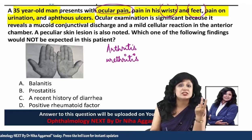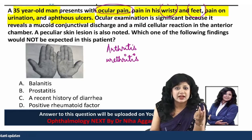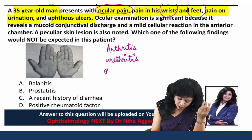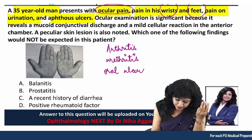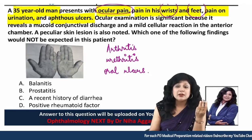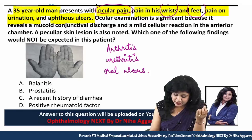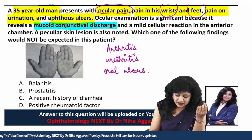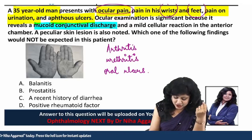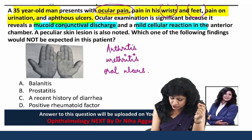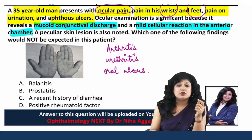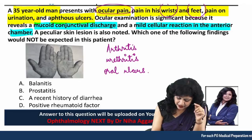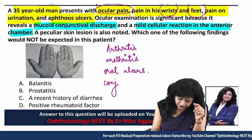Pain on urination could be urethritis. So we have history suggestive of arthritis, history suggestive of urethritis, and also oral ulcers. Ocular examination is significant: there is a mucopurulent conjunctival discharge and a cellular reaction in the anterior chamber.